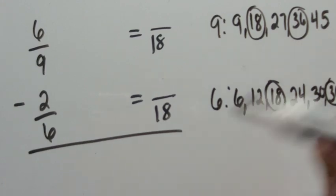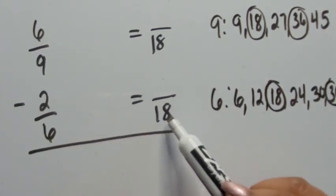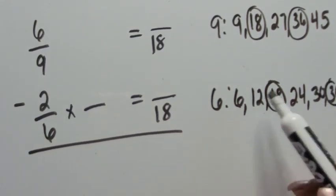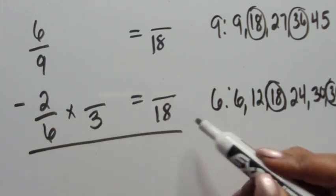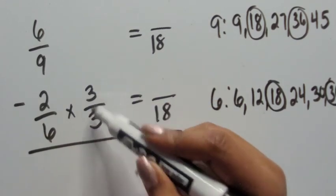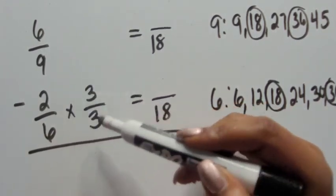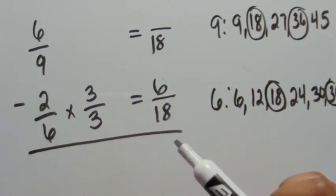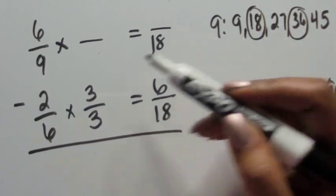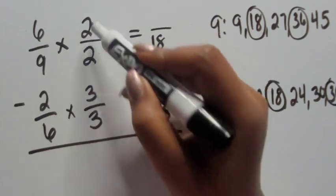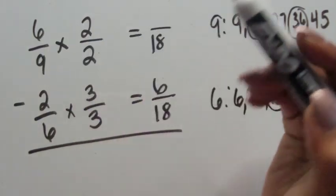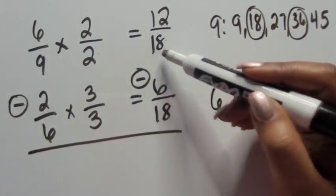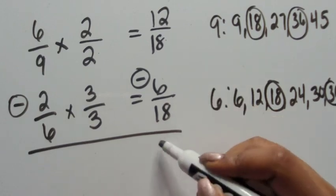Like in example one, let's think about what fraction equal to one gives us eighteen as the new denominator. Six times what equals eighteen? Looking at our list of multiples: one, two, three — three groups of six equals eighteen. So we multiply the numerator by three as well: two times three is six, giving us six-eighteenths as the equivalent fraction for two-sixths. For six-ninths: nine times what equals eighteen? Two groups of nine is eighteen, so we multiply the numerator by two: six times two is twelve, giving us twelve-eighteenths. Now that our denominators are the same, twelve-eighteenths minus six-eighteenths equals six-eighteenths.